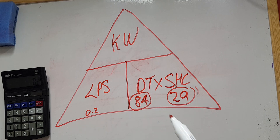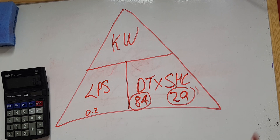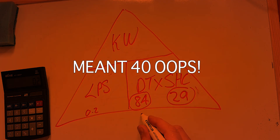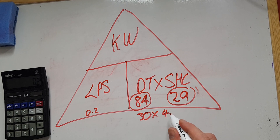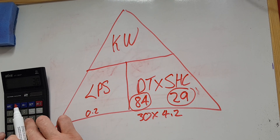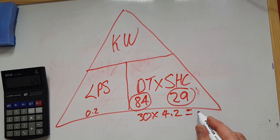Your delta T would be your incoming flow temperature. So let's say we're going to work off 10 degrees, and you want your flow temperature to be 50 degrees — that's a delta T of 30. So 30 times specific heat capacity of 4.2 gives us 126.